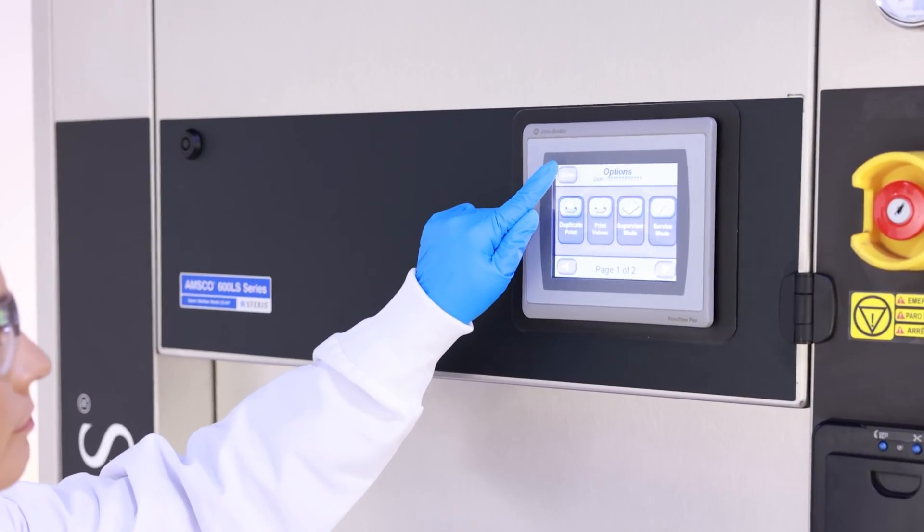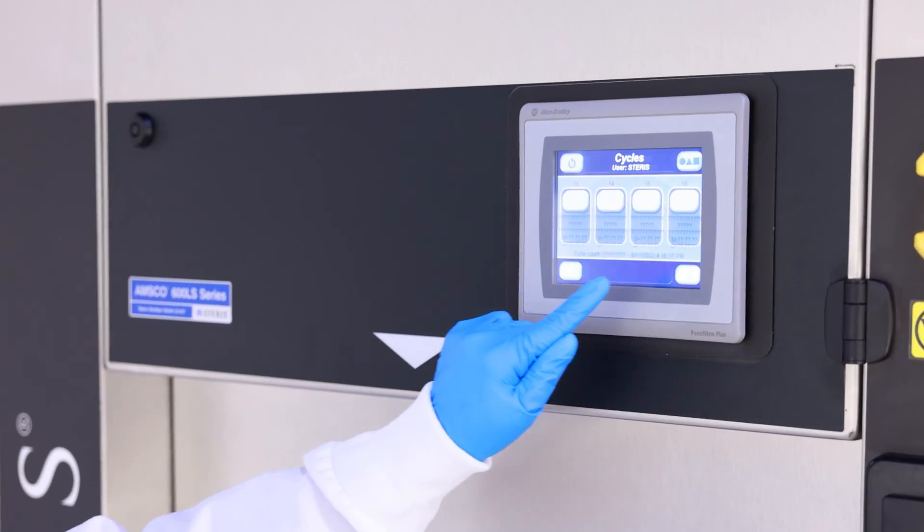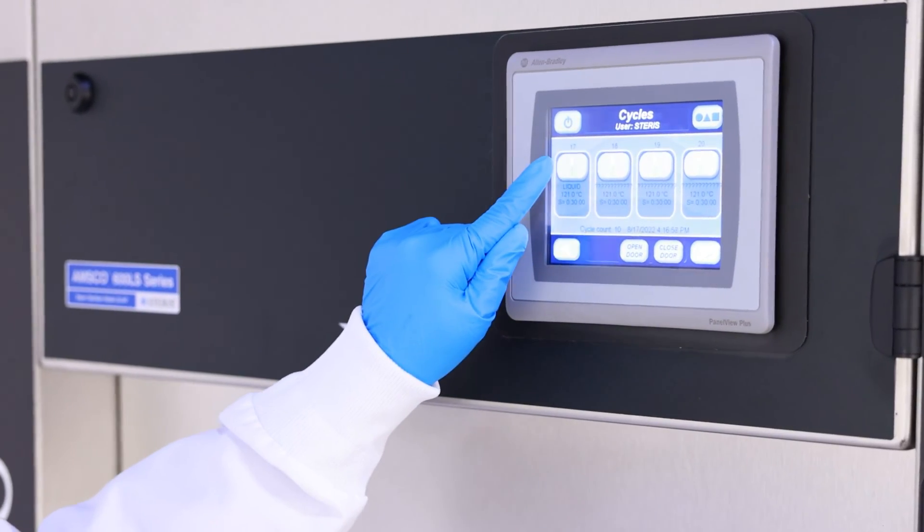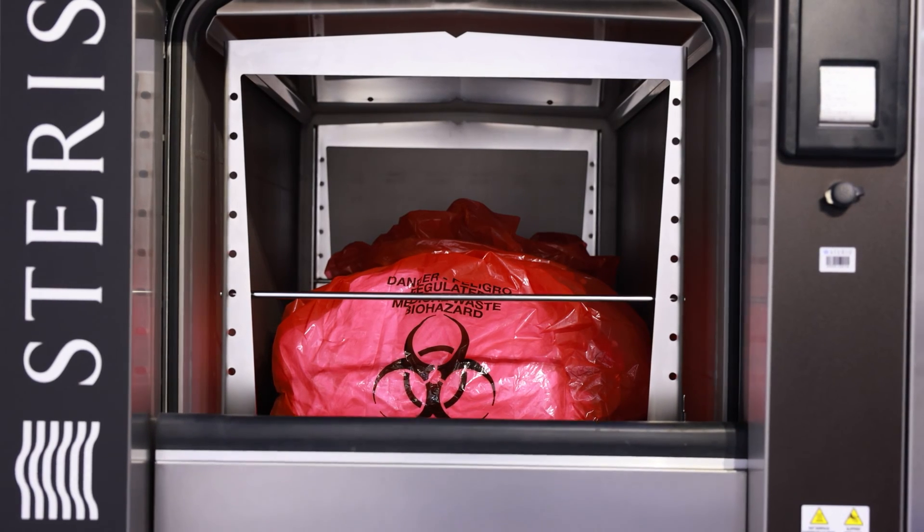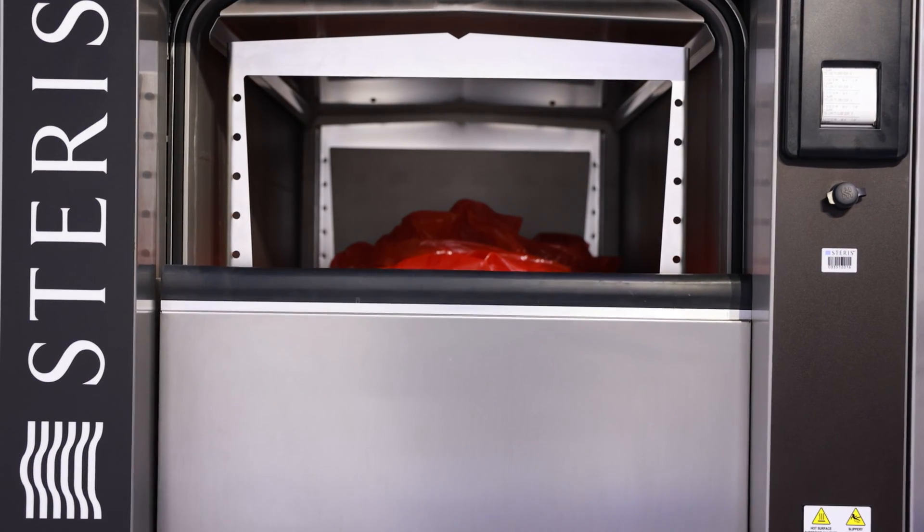All AMSCO 600LS are equipped with standard pre-vacuum, liquid and gravity factory preset, and programmable cycles as well as a cycle designed to efficiently process laboratory waste bags.